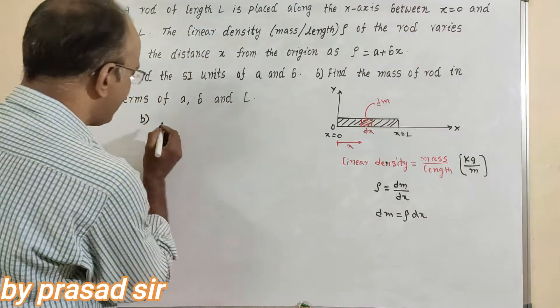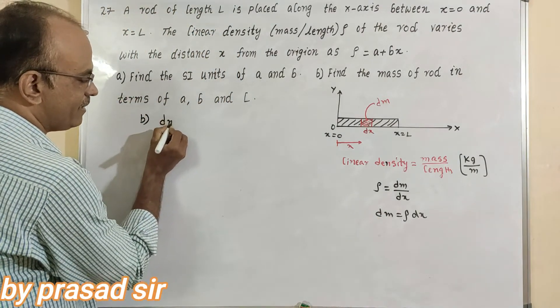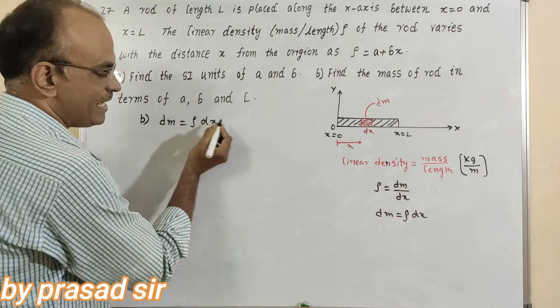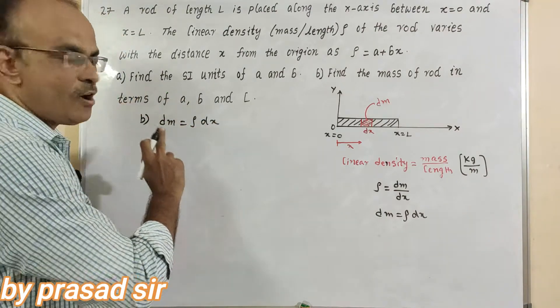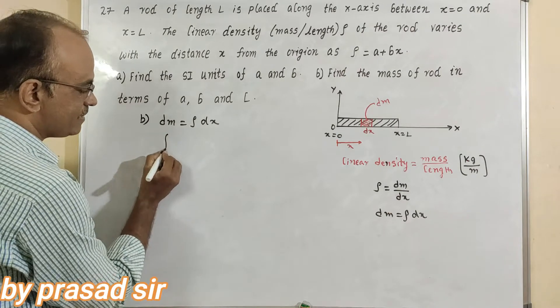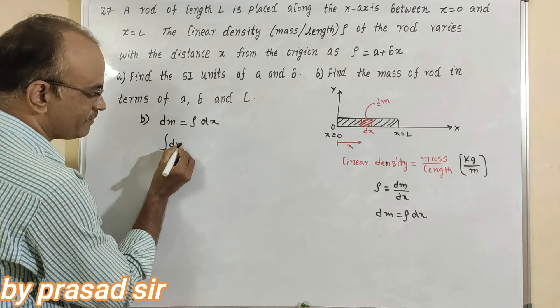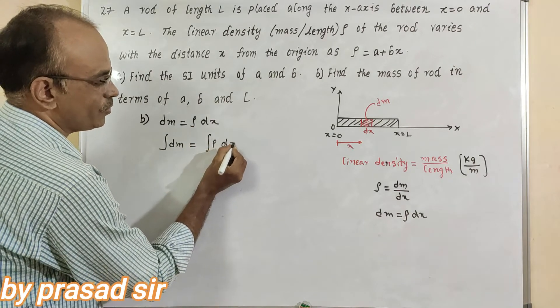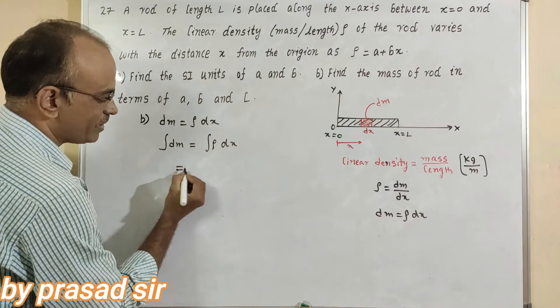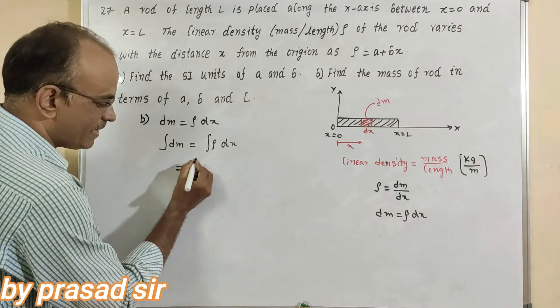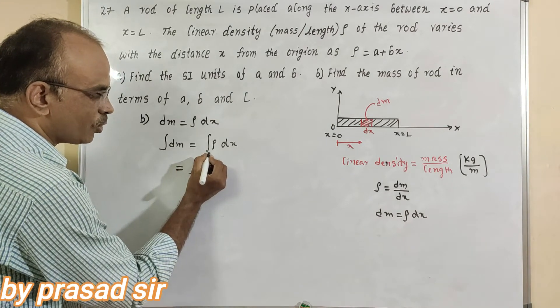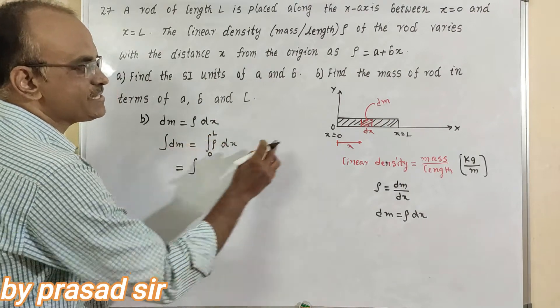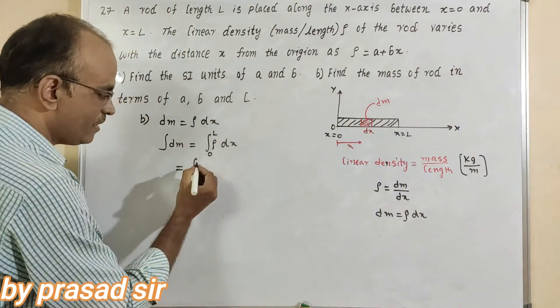What is the mass we got here? For that element particularly, dm equals linear density into dx. Apply integration on both sides. That is integral of dm equals integral of rho into dx. So listen properly. This is integral of rho dx from x equals 0 to x equals L, 0 to L.